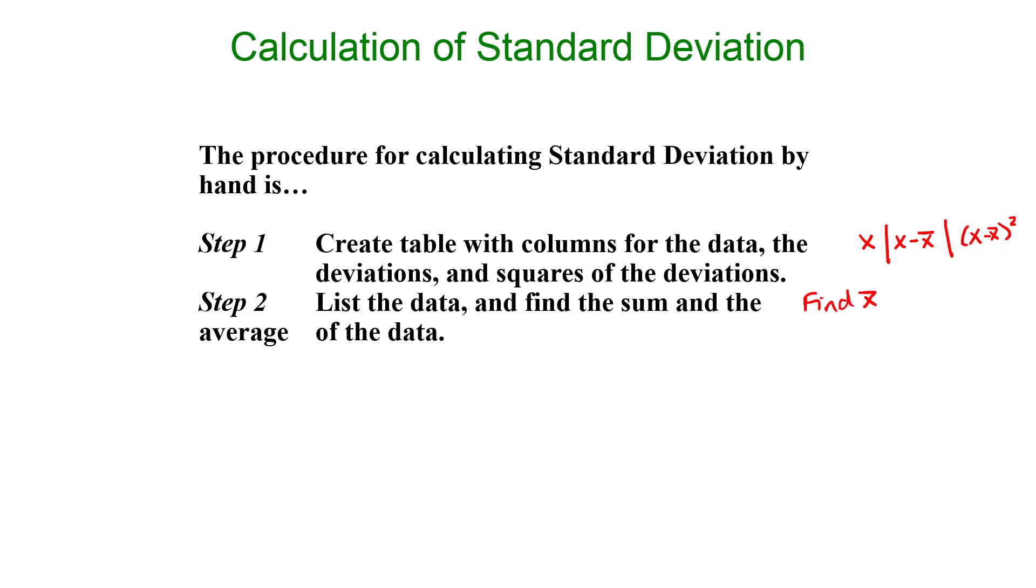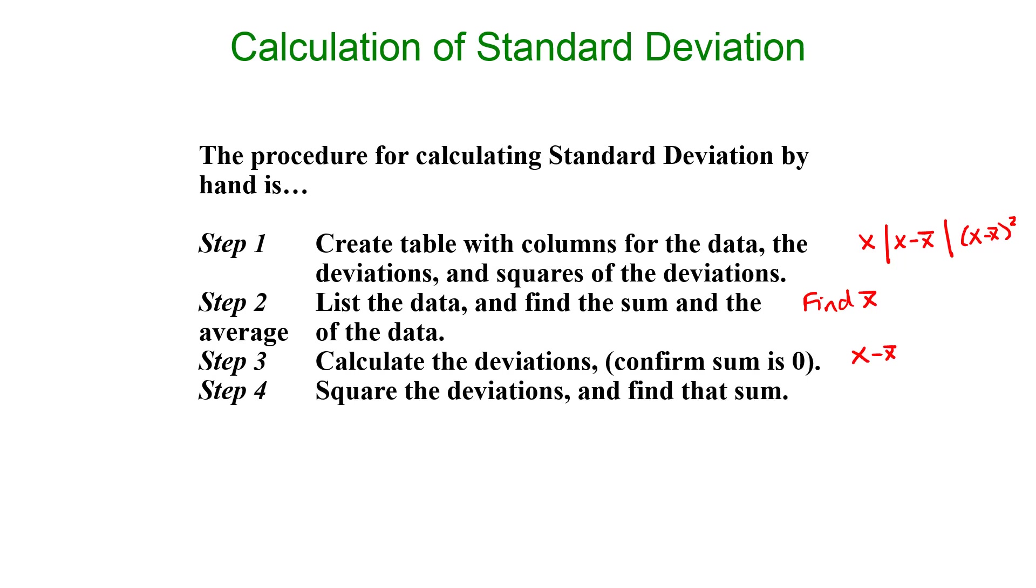Then you're gonna calculate the deviations. So you're gonna have to calculate X minus X bar a bunch of times. It is a good idea to add up the deviations column because it should add up to zero. So that's kind of just to check that you're doing well so far. Then you're gonna go to the next column, square all the deviations that you just found. So you're gonna fill in the column X minus X bar squared by squaring all the numbers you just found. And then you add them up.